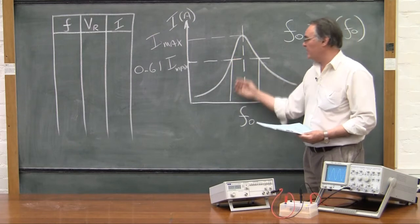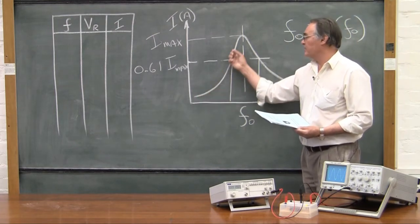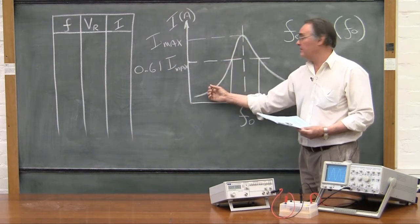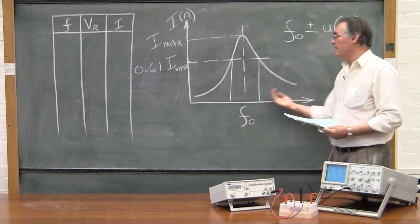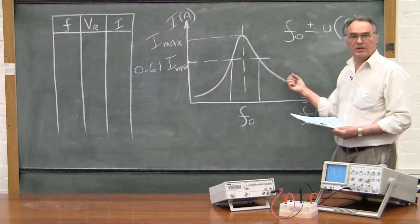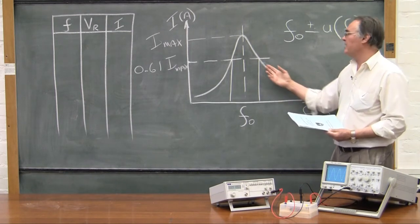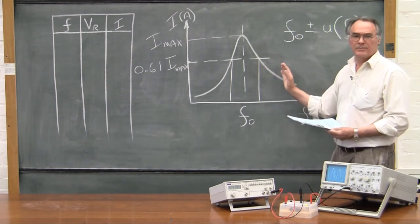The reason for that is because at frequencies below resonance, the impedance of this circuit is dominated by the capacitor. That's a non-linear device with respect to the frequency, whereas at frequencies above resonance, the circuit is dominated by the inductor. It turns out the inductor does respond linearly to frequency, and that's what gives this asymmetry.